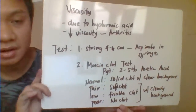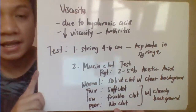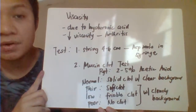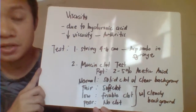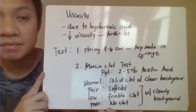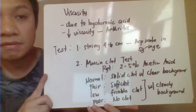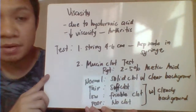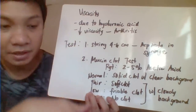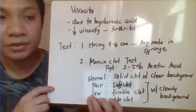For the viscosity test: normal synovial fluid is highly viscous because of the hyaluronic acid. However, in cases of arthritis, this viscosity is decreased and the fluid becomes liquid-like instead of the usual viscous fluid. For the string test, aspirate your synovial fluid in a syringe or pipette, then allow it to flow from the tip. Normally it is able to form a 4 to 6 cm string before it breaks. If the fluid is not viscous, it will not form a string and will just drop immediately.